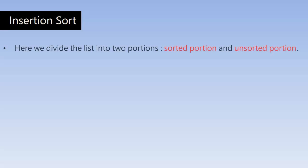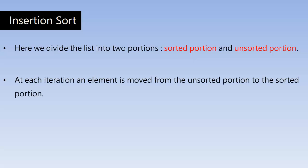The working logic is like this. Here we divide the list into two portions: sorted portion and the unsorted portion. At each iteration an element is moved from the unsorted portion to the sorted portion, and eventually we get the list sorted. Once we do it practically you will get a better idea.